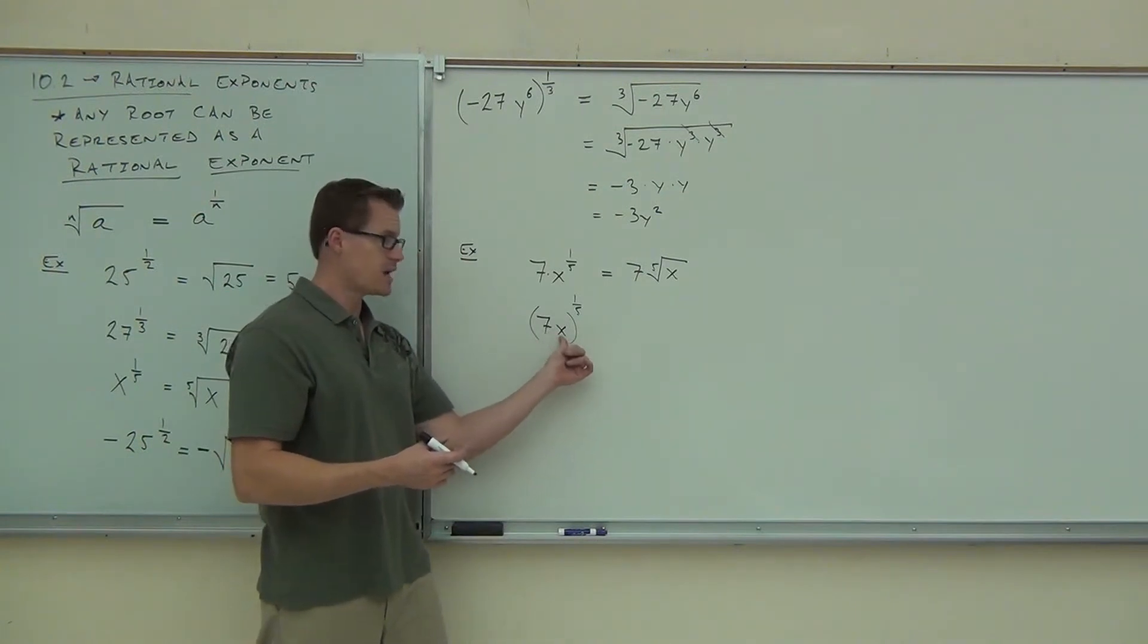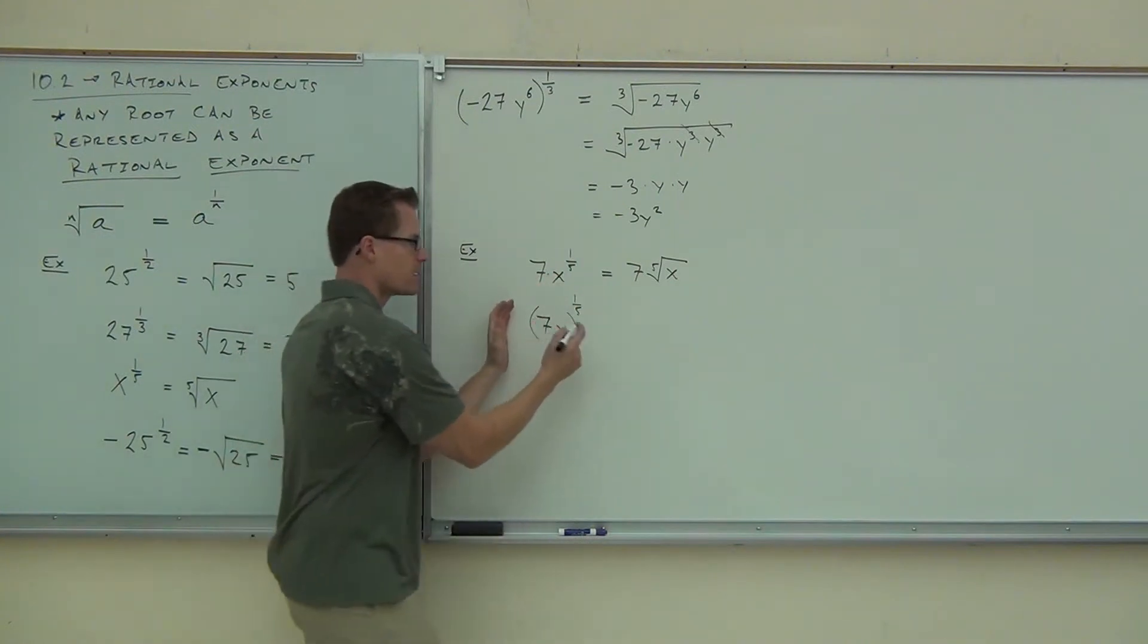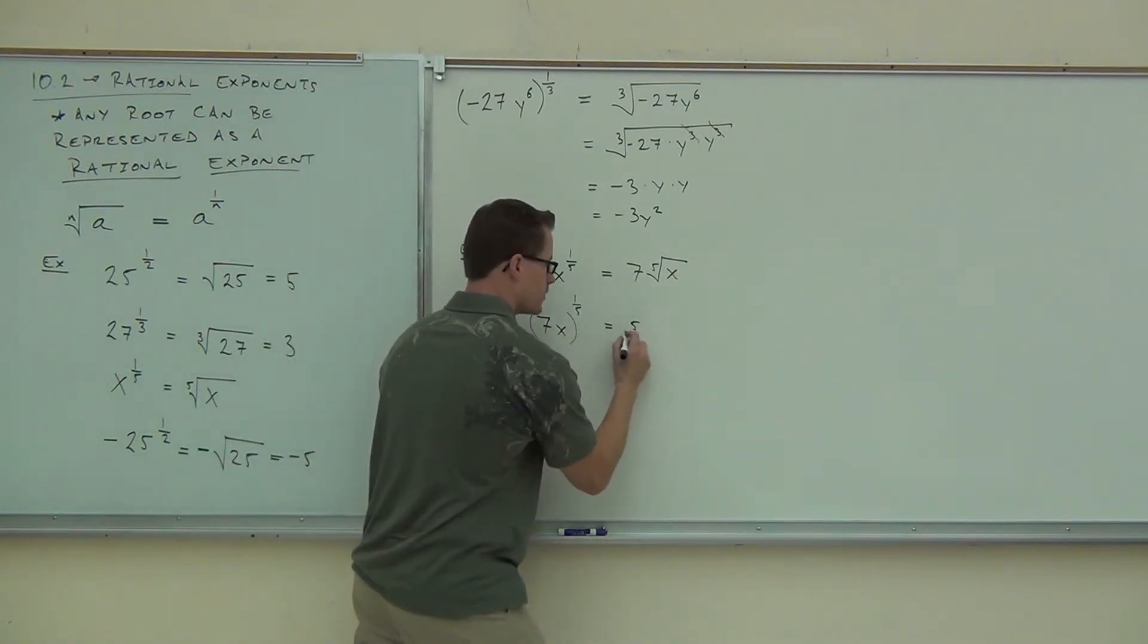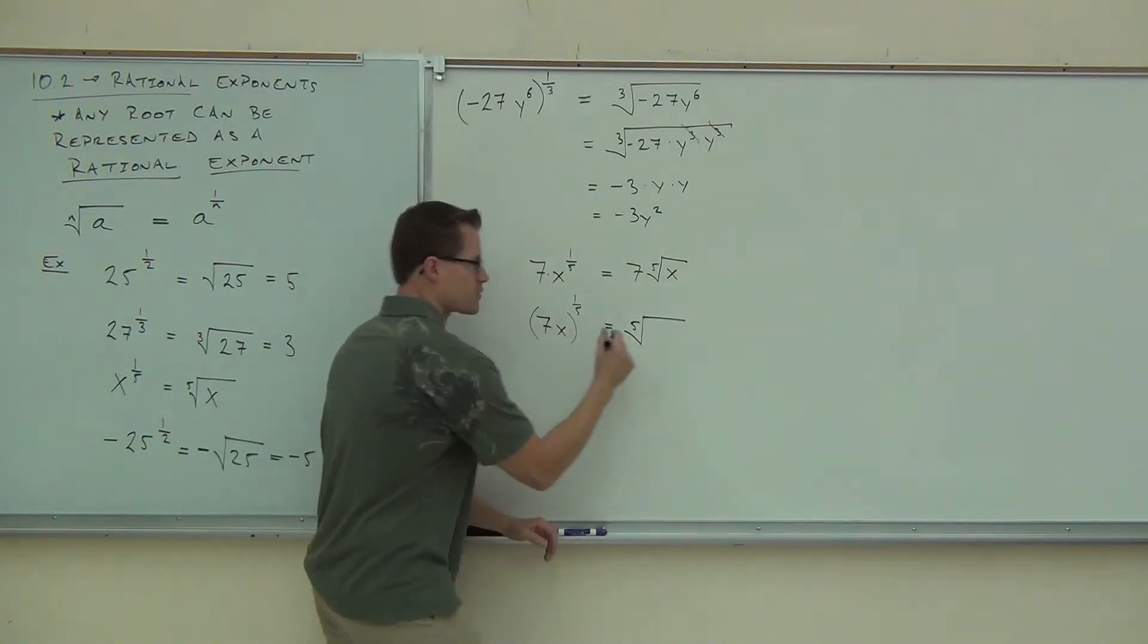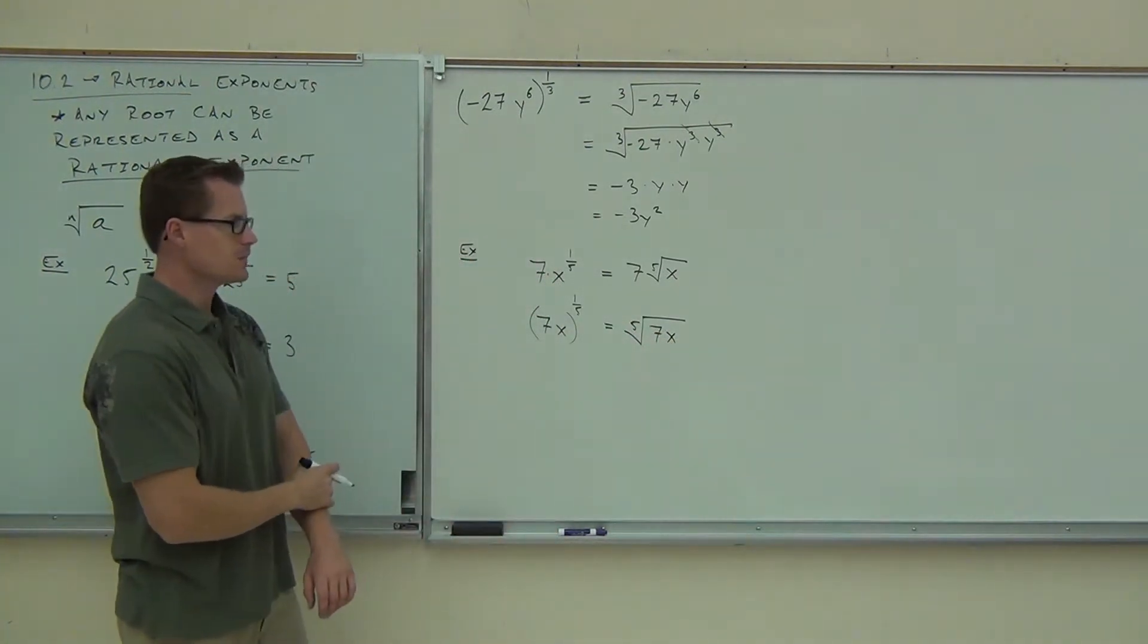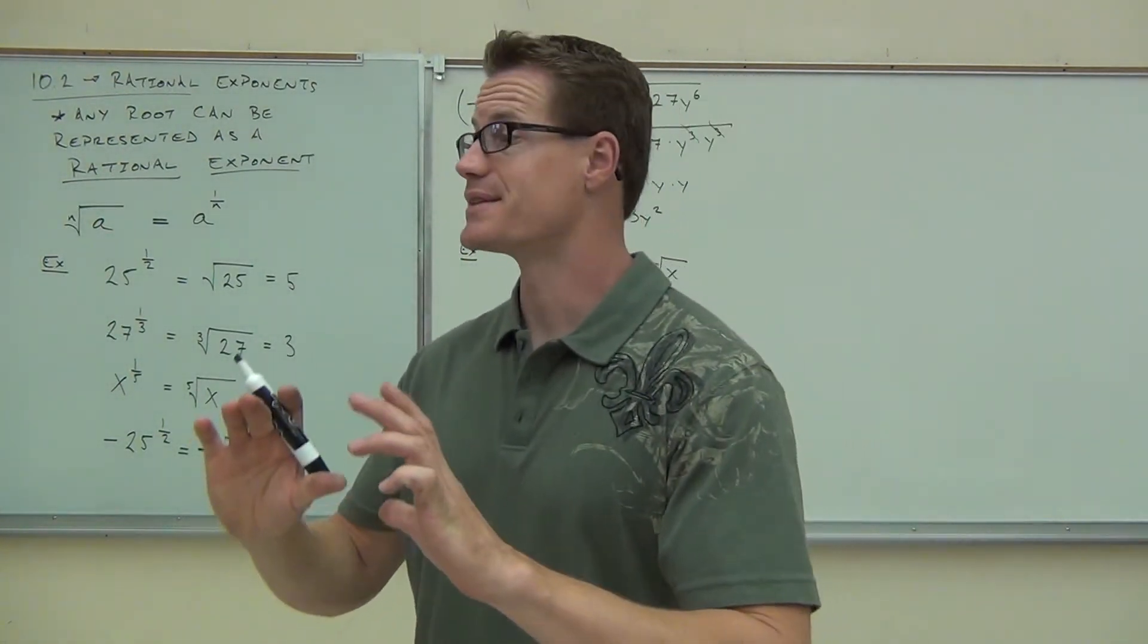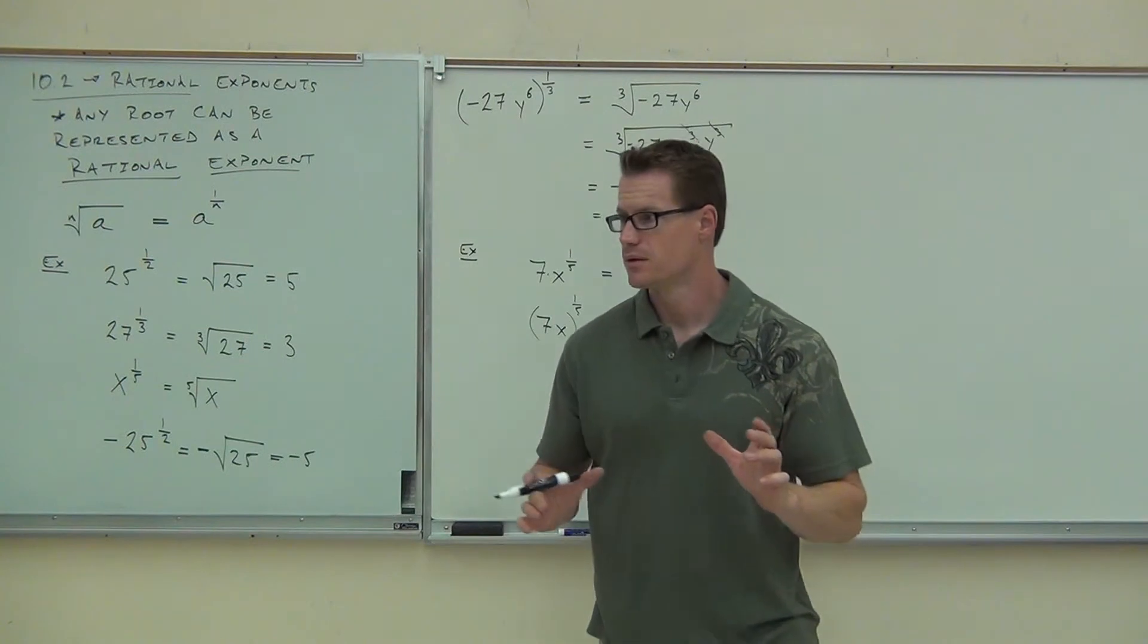Do you see the difference between this one and this one? This is still 7 times x, but all of that's to the 1/5th power. So this says I do have a 5th root and everything in the parenthesis is going to be my radicand, what's on the inside. So again, if it's in parenthesis, yes, it goes on the inside of your radical. If it's not in parenthesis, it doesn't.